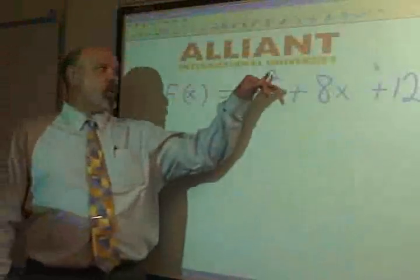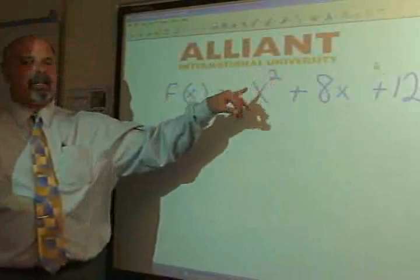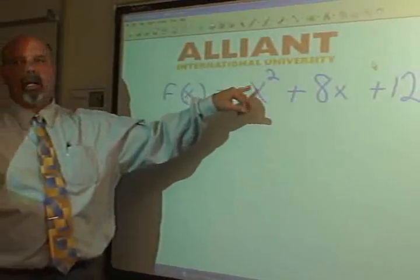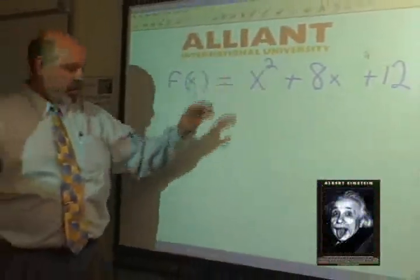We have a quadratic equation, the squared power—that is the highest exponent. That is called the degree of a polynomial. This is a square.